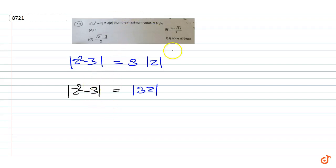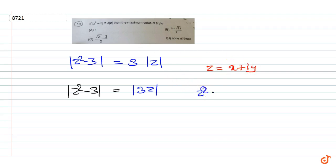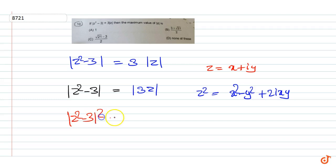This gives: let z = x + iy. Then z² = x² - y² + 2ixy. Now, squaring both sides, this gives |z² - 3|² = 9|z|².